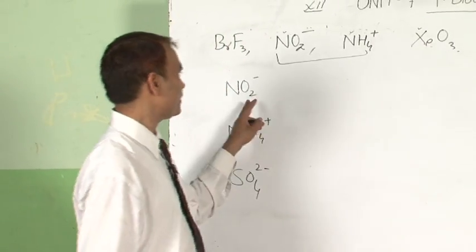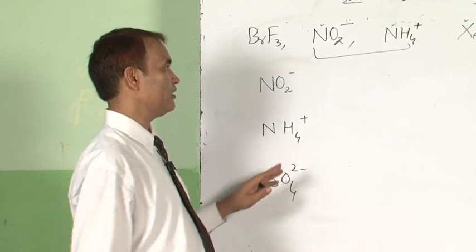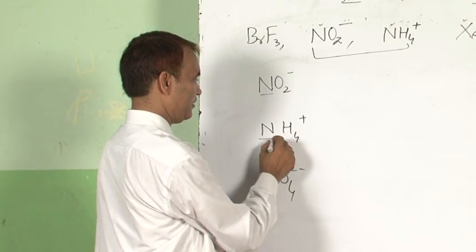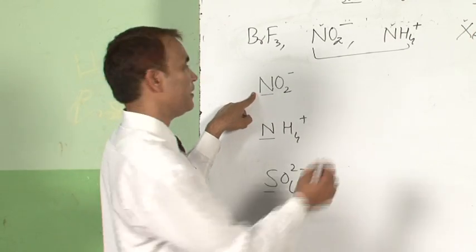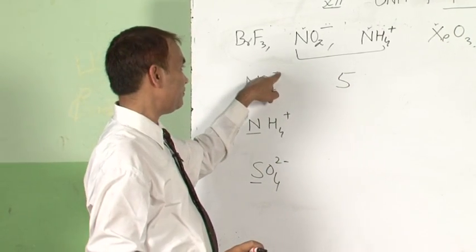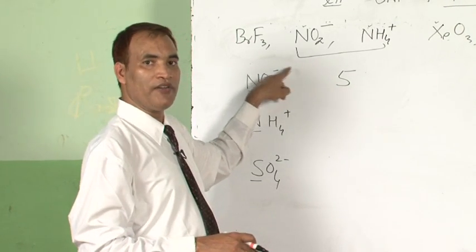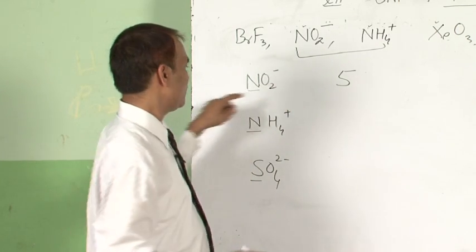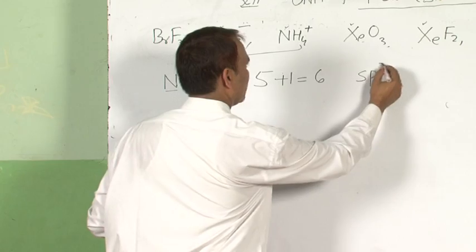Now the other examples for the charged species: NO2 minus, NH4 positive, SO4 2 minus. In the same way, find the central atom first — central atom N, central atom N, central atom sulfur. N belongs to group 15, which means 5 electrons. If oxygen is a bonding atom, ignore it. But if there is a negative charge, add electrons equal to the charge. For NO2 minus, 5 plus 1 equals 6, so this means sp2 hybridization.